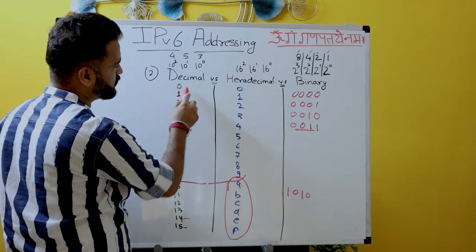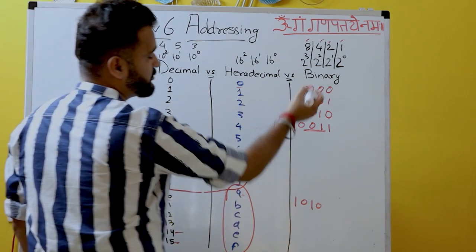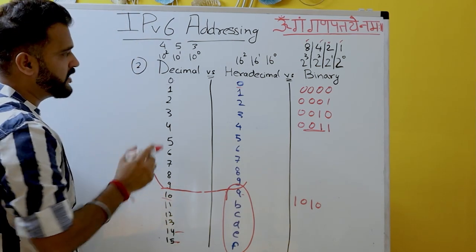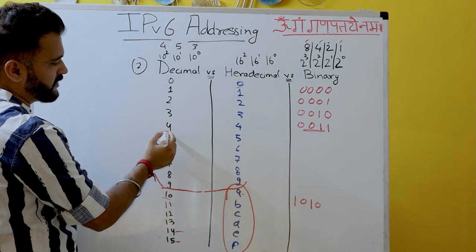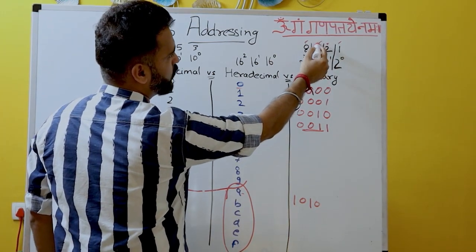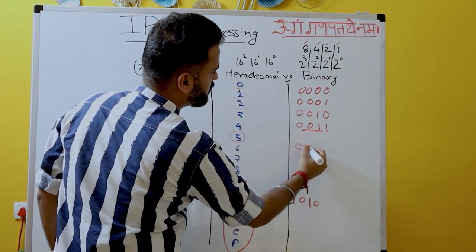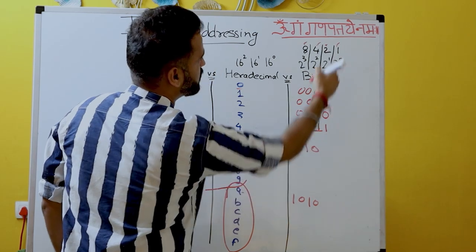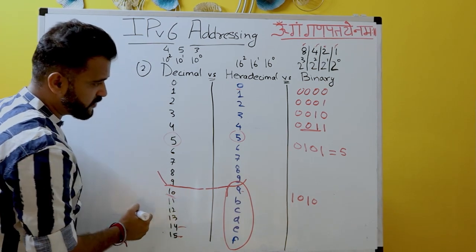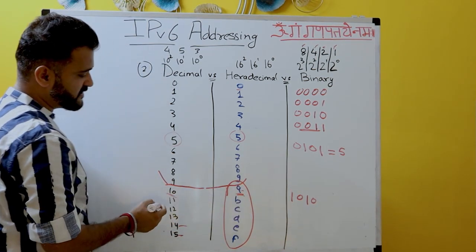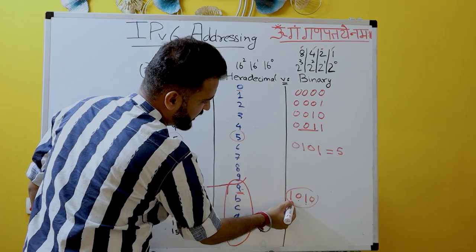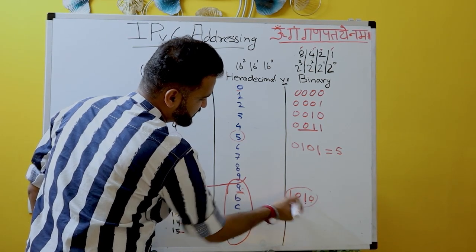If you have 0 in decimal, in hexadecimal it is also 0, and in binary you achieve 0 with 0000 across all four bit positions. For example, decimal 5 equals 4 + 1, so in binary it is 0101. For decimal 10, which is 'A' in hexadecimal, you achieve it as 8 + 2, so in binary it is 1010.